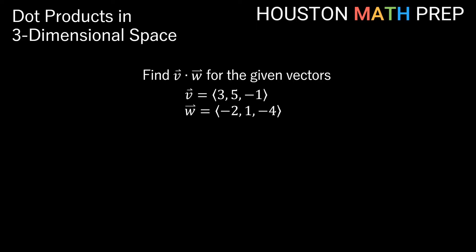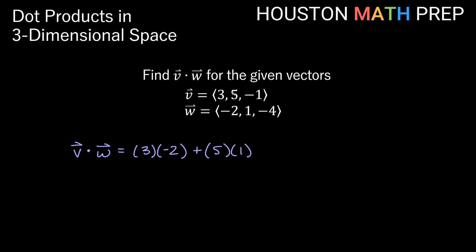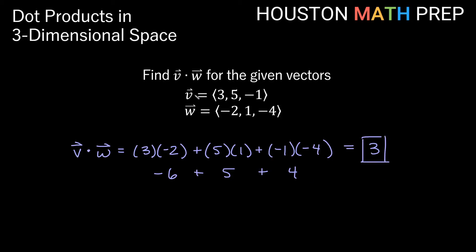Let's do a couple of examples. We're going to find V dot W where vector V is (3, 5, -1) and vector W is (-2, 1, -4). Our dot product is 3 times -2, plus 5 times 1, plus -1 times -4. That gives us -6 plus 5 plus 4, which equals positive 3 for our dot product.